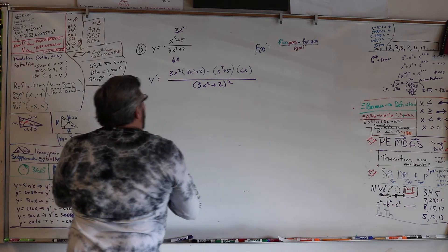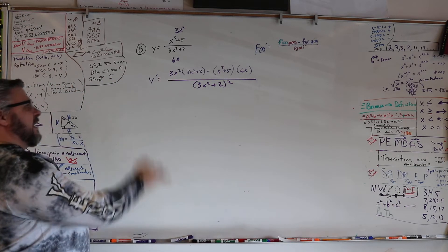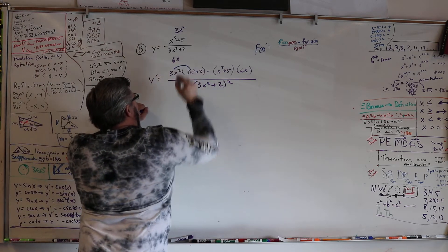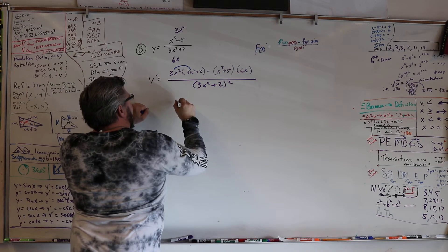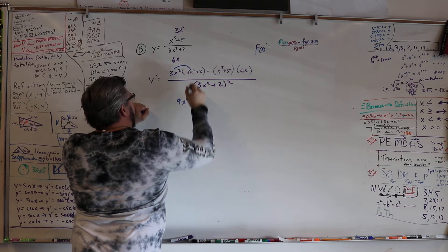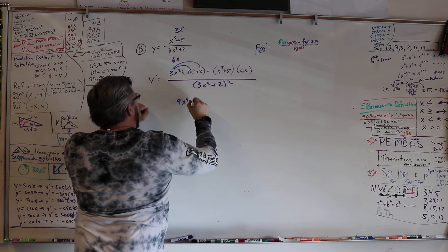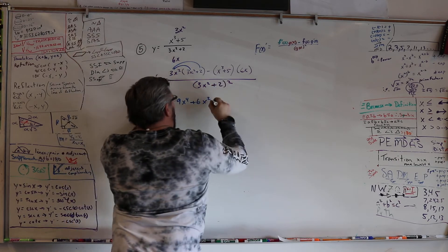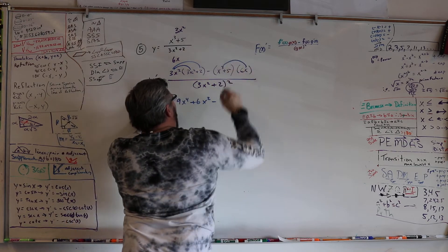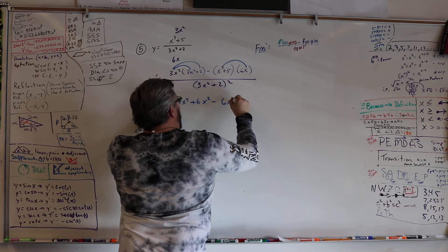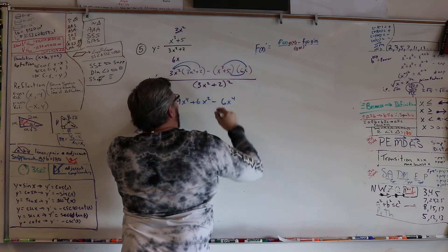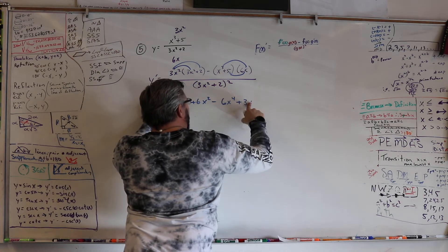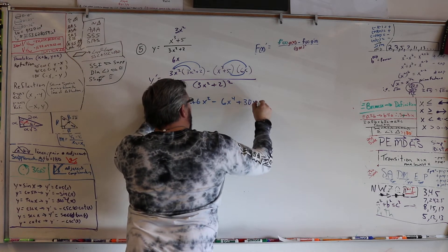All right, now let's just put some stuff together. Everybody on the block gets the paper, so that's going to be 9x to the fourth, and that's going to be plus 6x squared, minus 6x to the fourth, and plus 30x.